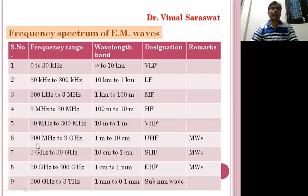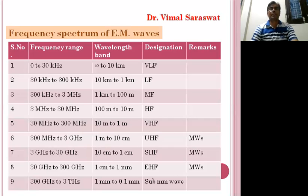The next wave ranges from 300 MHz to 3 GHz in frequency and from 1 m to 10 cm in wavelength. This wave is the ultra high frequency wave. The next wave ranges from 3 GHz to 30 GHz in frequency and from 1 cm to 1 mm in wavelength. This wave is the super high frequency wave.